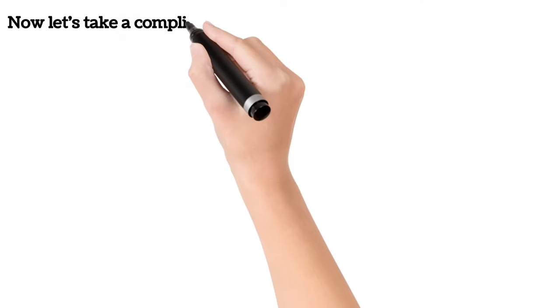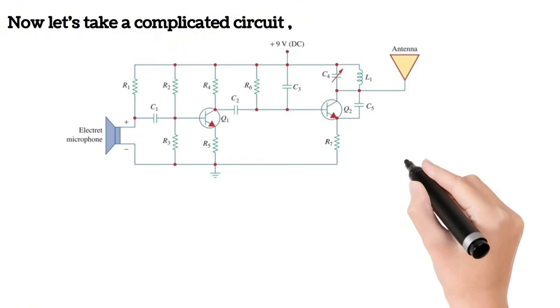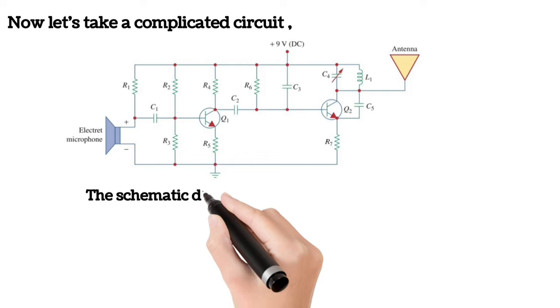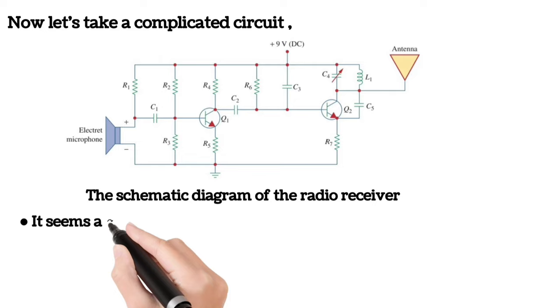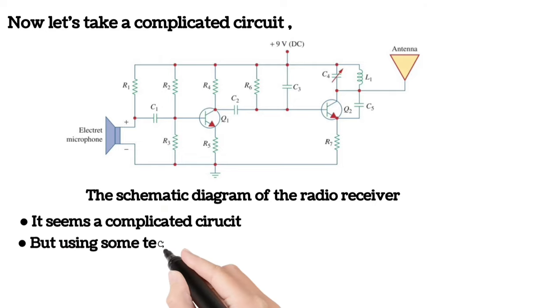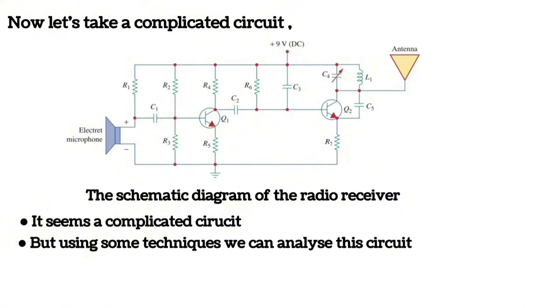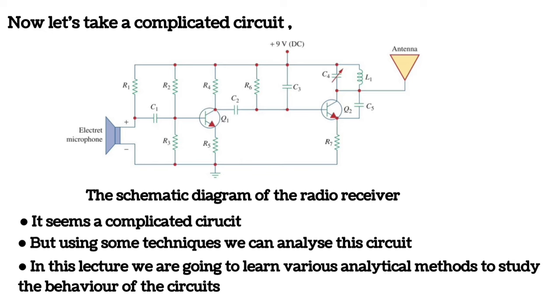Now let's take a complicated circuit. This is the schematic diagram of a radio receiver. Although it is a complicated circuit, we can analyze these circuits using some techniques. This is what we are going to learn in this course — how to analyze complicated circuits using various analytical methods and to study the behavior of these circuits.